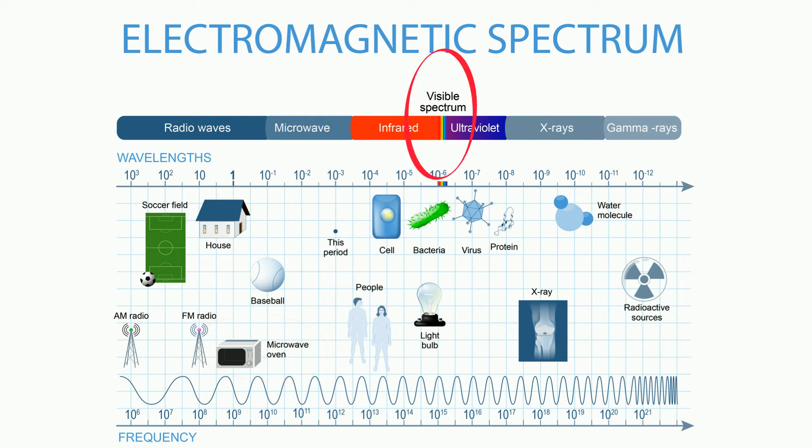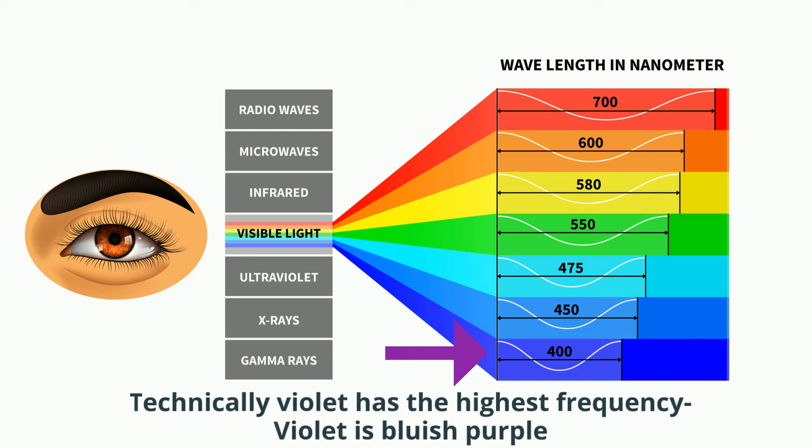In the middle is visible light, with a wavelength the size of bacteria. Visible light can be subdivided by color, with red having the lowest frequency and blue having the highest frequency.